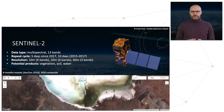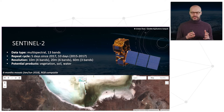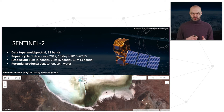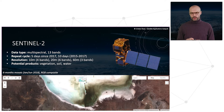Another optical mission is Sentinel-2, again multispectral with 13 bands. The repeat cycle is shorter at 5 days since 2017, and the resolution is slightly better — 10 meters over 4 bands, with 20 and 60 meters for others. Potential products cover vegetation, soil, water, and more.